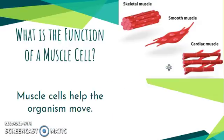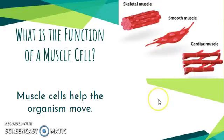Muscle cells help the organism move. We have different types of muscle cells: skeletal muscle, smooth muscle, and cardiac muscle. When we talk about helping the organism move, we're talking about skeletal muscles, which are attached to your bones — that's how I remember the name, skeletal muscle. They help us walk and raise our hand.